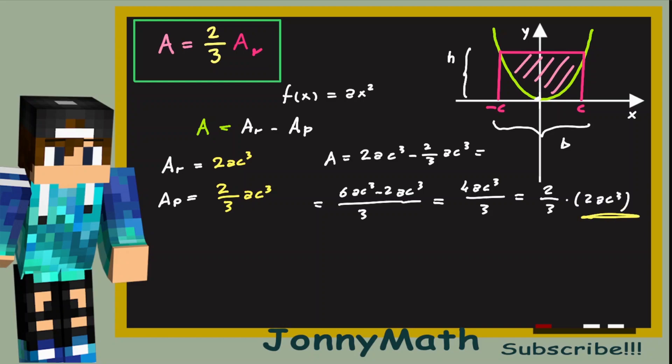And notice that 2ac cubed is equal to the area of the rectangle. So we can write this as 2 thirds times the area of the rectangle. And we are done.